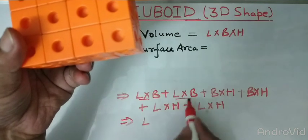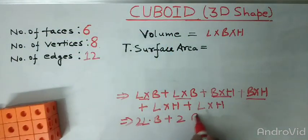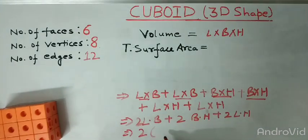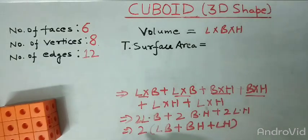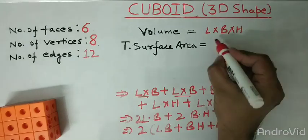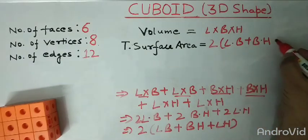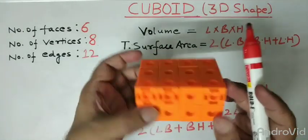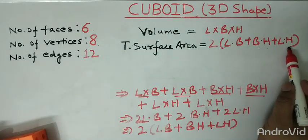Now let us simplify this. We are having 2 times length into breadth, that is 2LB, plus 2 times breadth into height, that is 2BH, plus 2 times length into height, that is 2LH. Taking 2 as common, the total surface area equals 2 times of LB plus BH plus LH. So the total surface area of the cuboid is equal to 2 times of length into breadth, plus 2 times breadth into height, plus 2 times length into height.